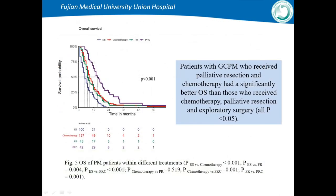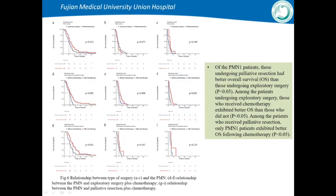Patients who received palliative resection and chemotherapy had significantly better overall survival than those who received chemotherapy alone or exploratory surgery. Among patients undergoing exploratory surgery, those who received chemotherapy exhibited better OS. Among patients who received palliative resection, only PMR grade 1 patients exhibited better OS following chemotherapy.